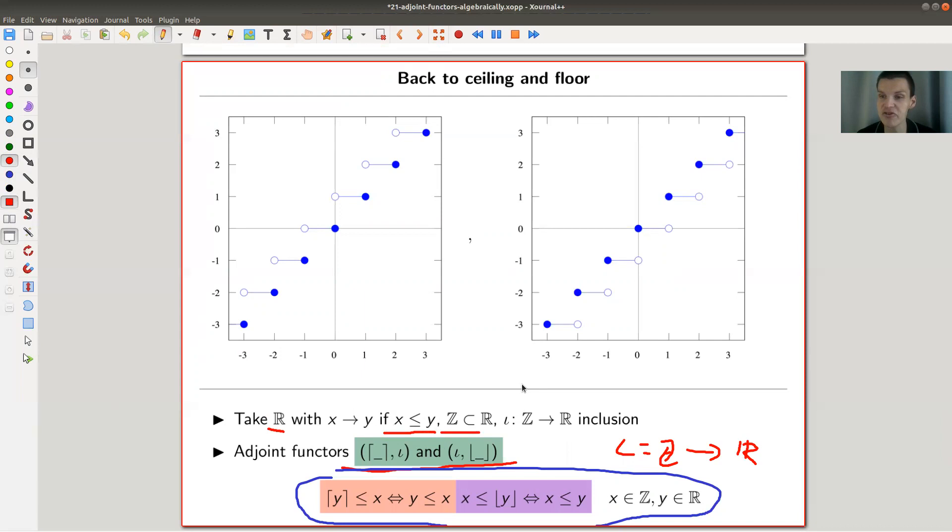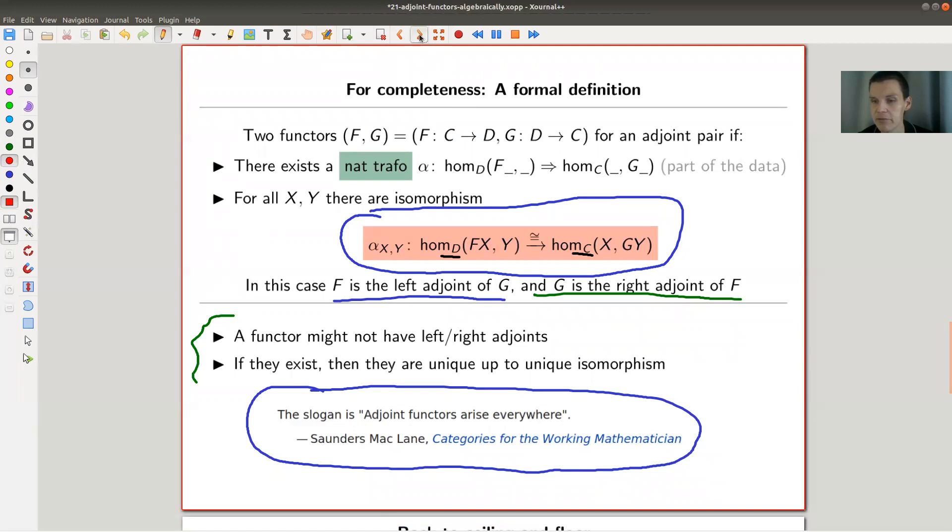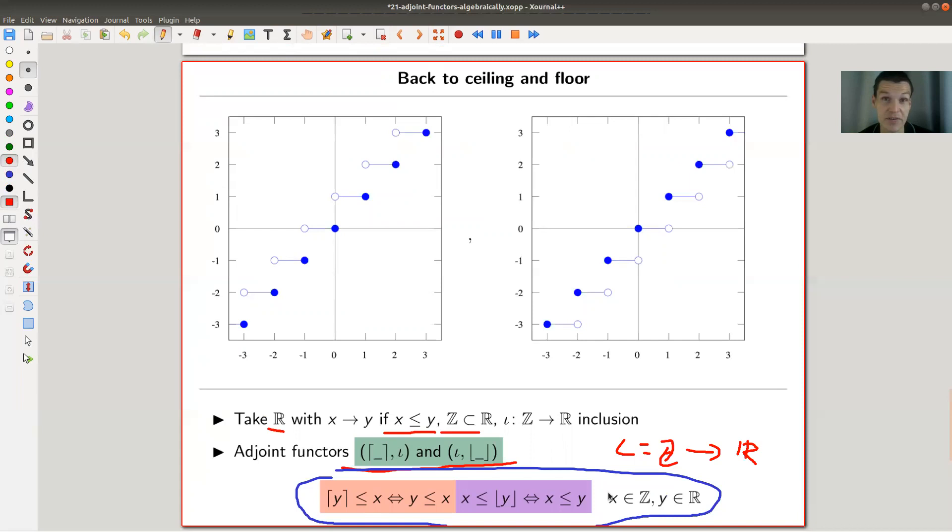And if you just write down, funny exercise, if you just write down this condition for this category, you will see that these are the two equations that you would need to justify that this is really an example of an adjoint pair.